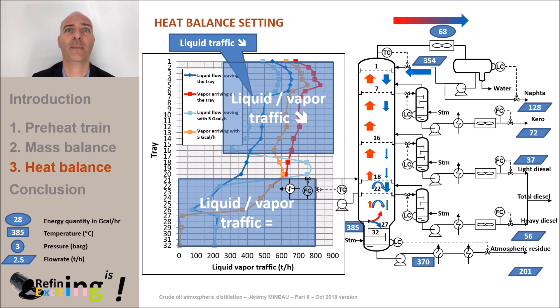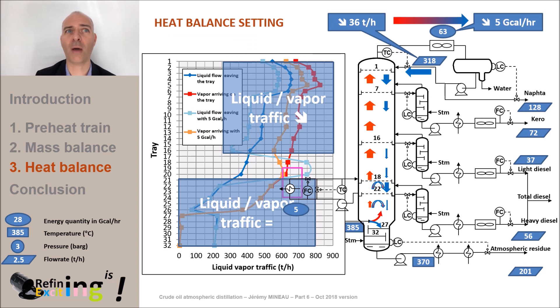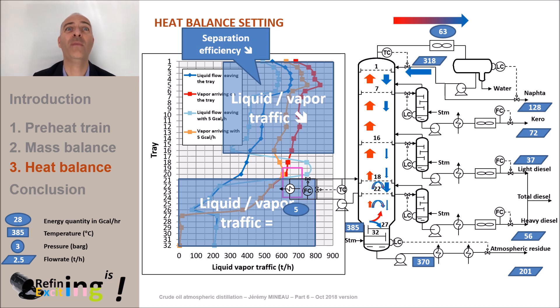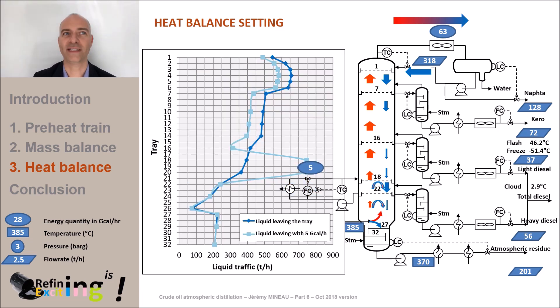In our first example, 5 giga calories per hour were extracted by the pump around. So, by energy balance, the overhead condenser duty will drop by 5 giga calories per hour. As we said just before, less gas rises in the tower and therefore less liquid will be refluxed in the column. This drop in liquid vapor traffic will cause a decrease in the separation efficiency of the column above the pump around zone. Yes, this is the price to pay when removing calories at a high temperature level. The separation efficiency is reduced above the pump around zone, but not below. Indeed, the kerosene flash point drops by 0.3 degrees C. The kerosene freezing point is unchanged, as is the cloud point of the total diesel.